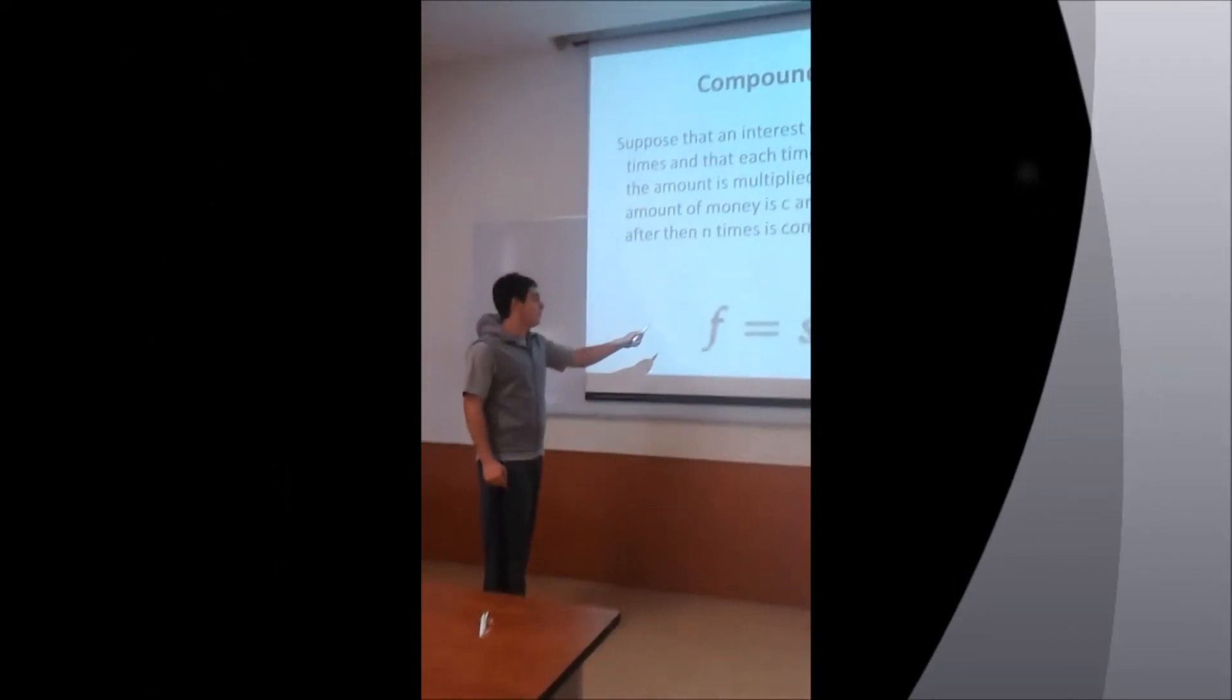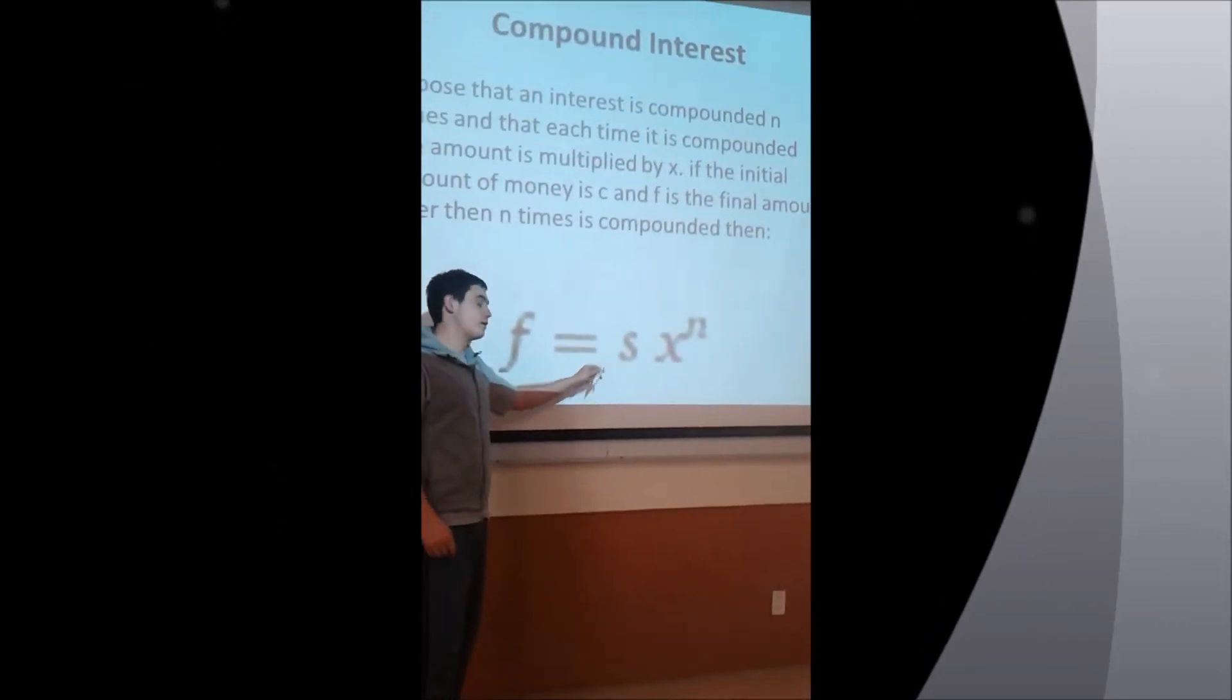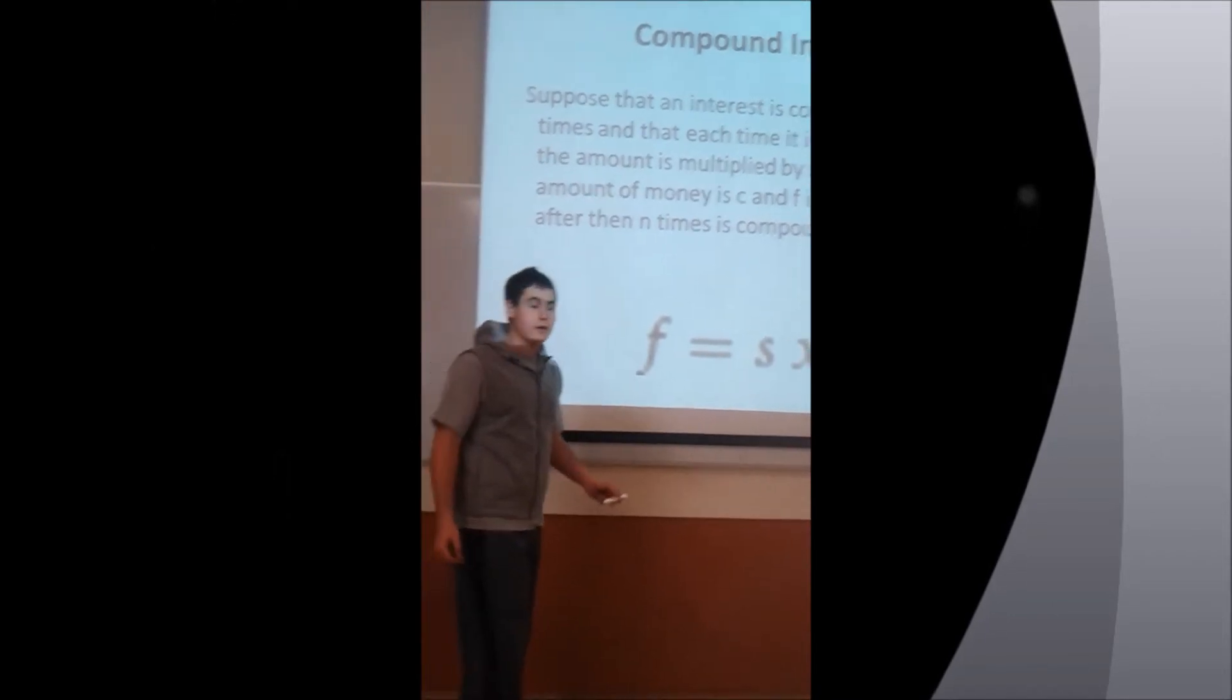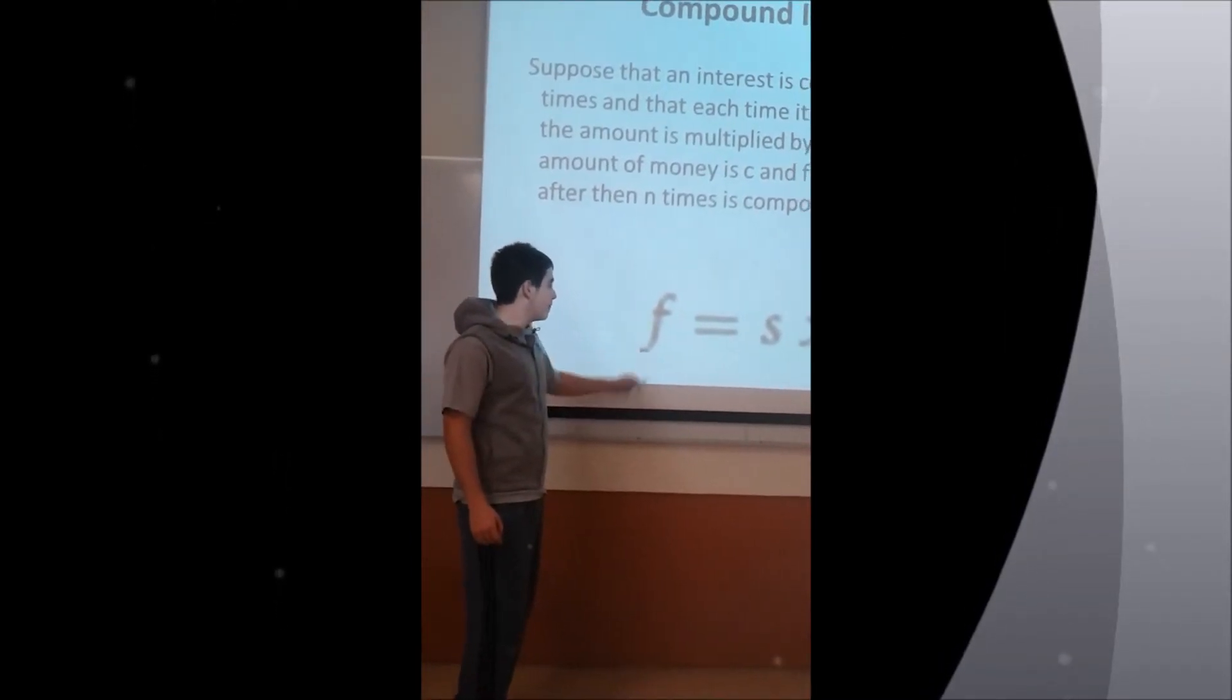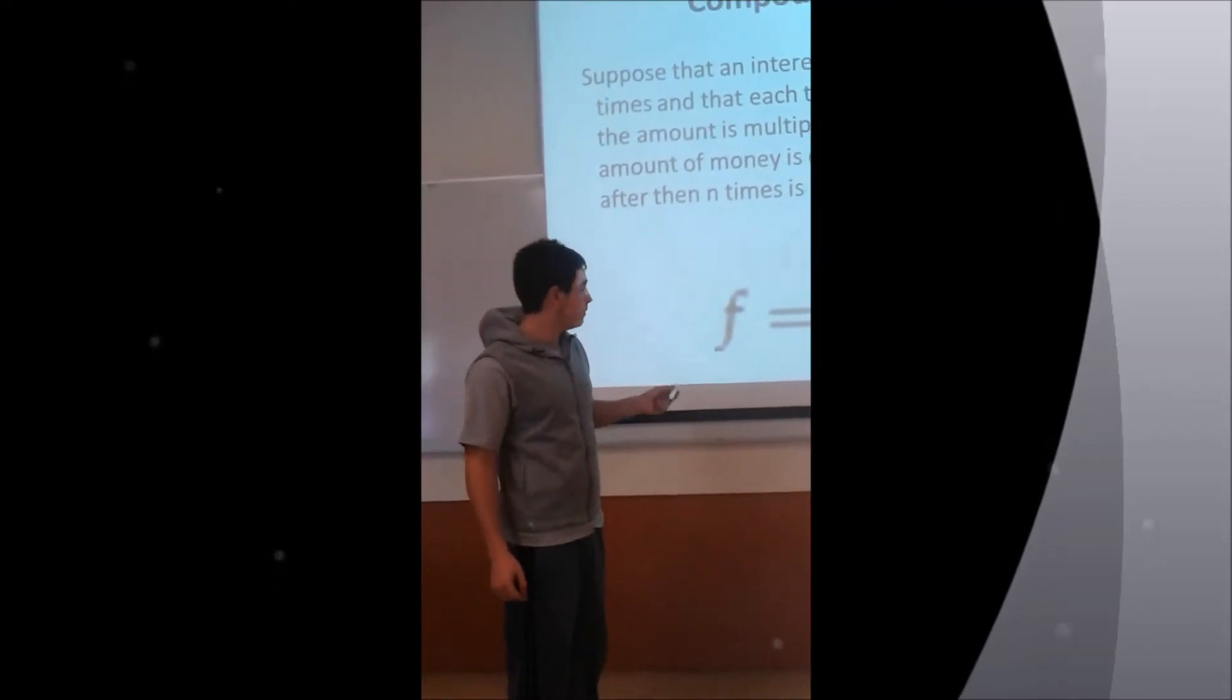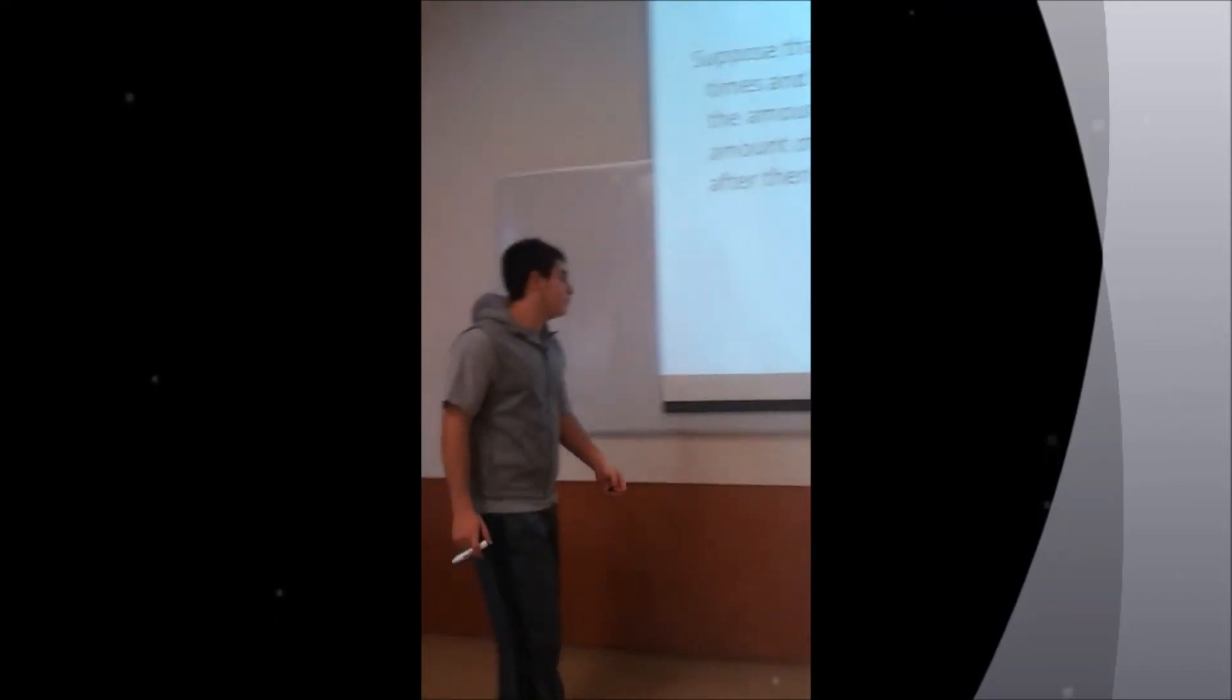This is the compound interest function. Suppose that you go to the bank, and you give them s money, and they tell you, after every month, we're going to take the money you have and multiply it by x. Then, what's the amount of money you're going to have after one year? Well, it's going to be s times x to the 12, because they're going to compound it 12 times. So in this case, n was 12, but n can be any number. So why don't we do an example?